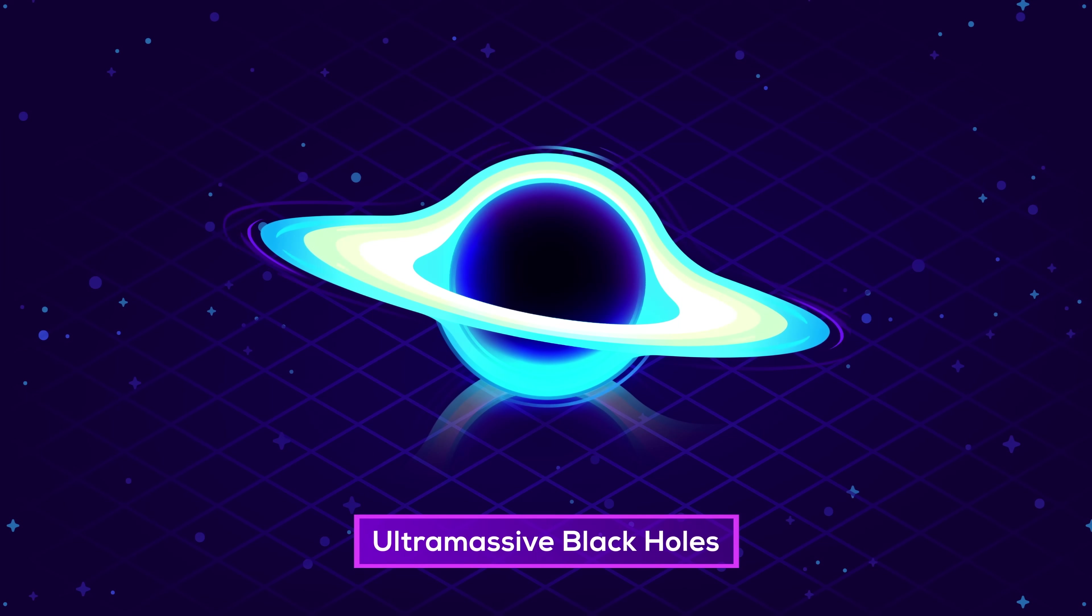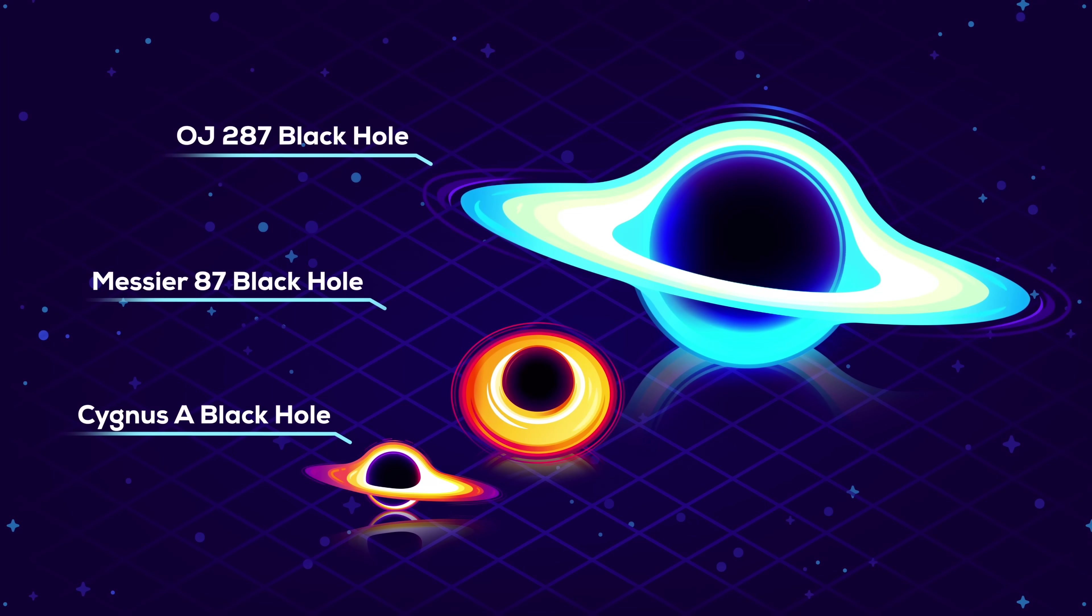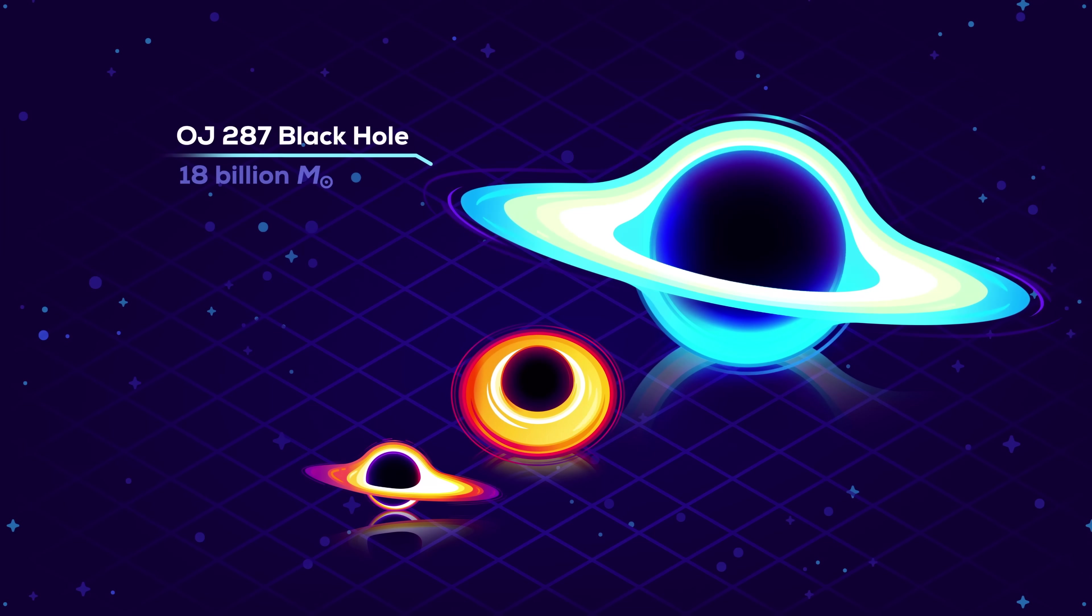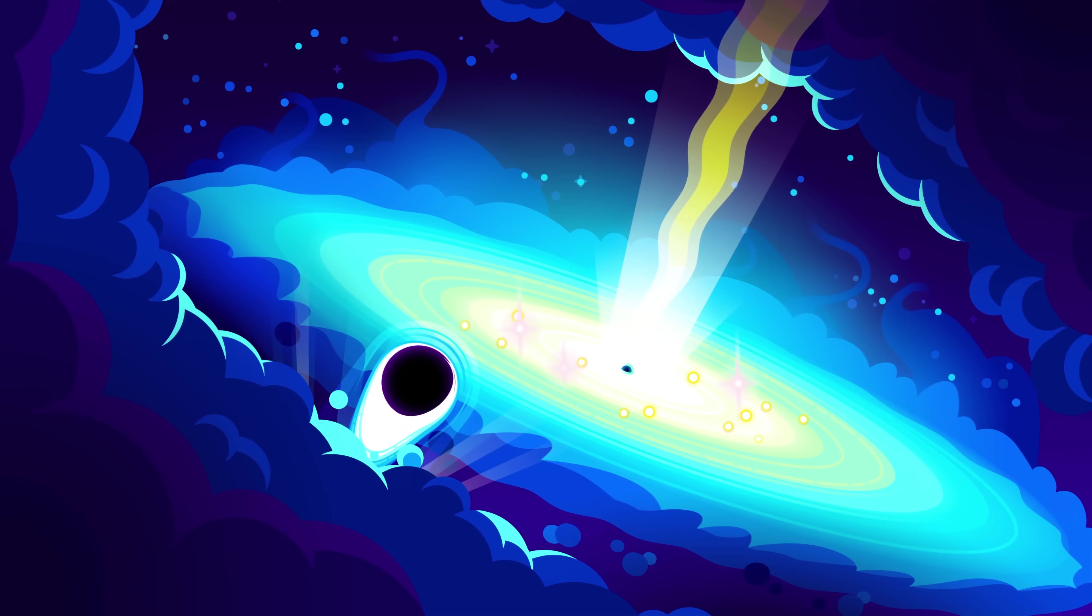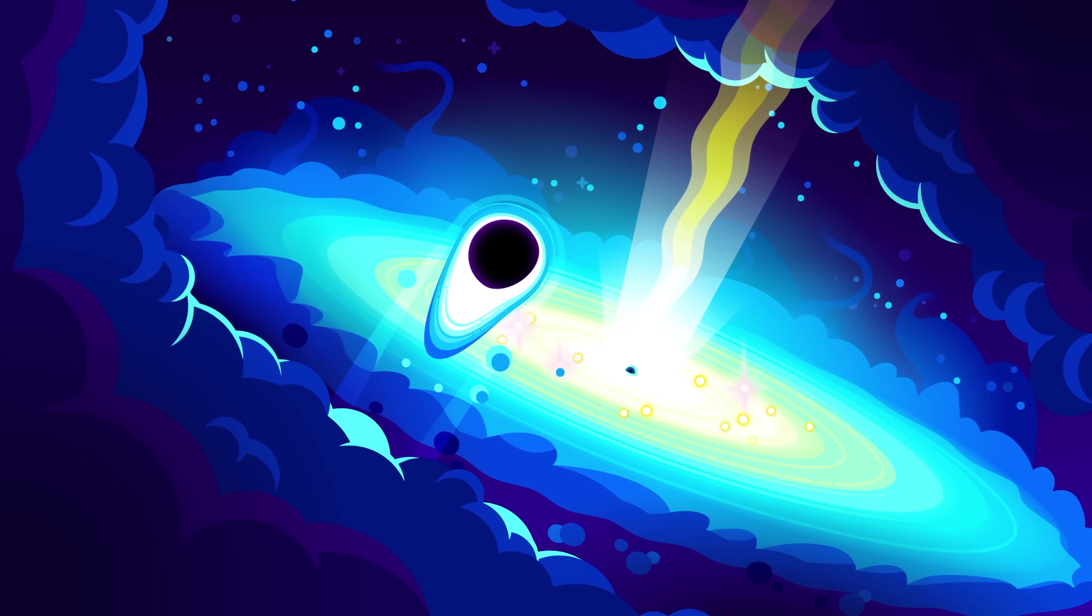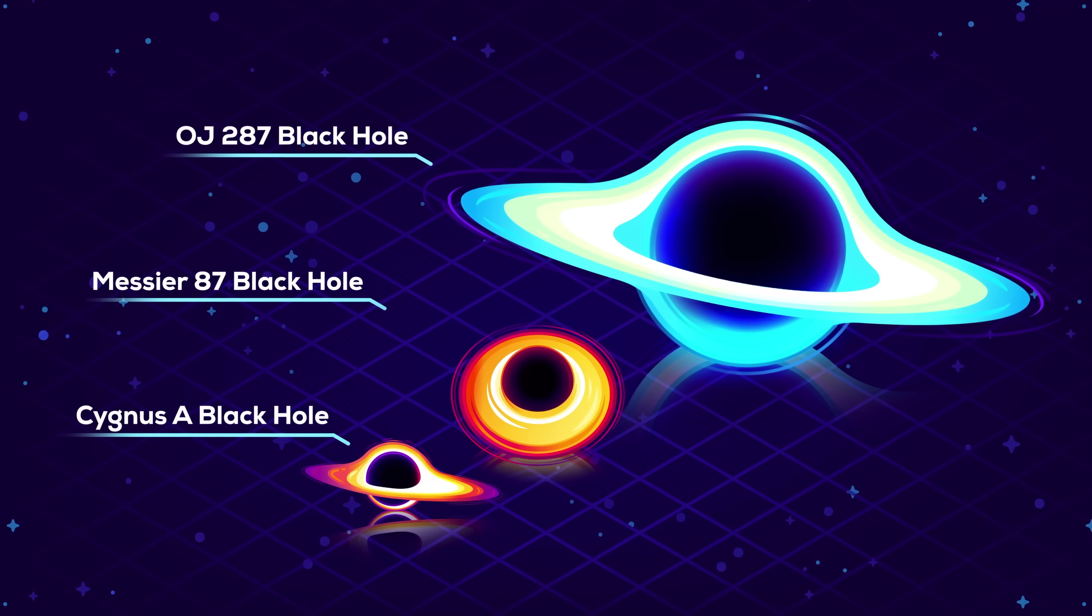So massive that they deserve a title of their own – ultramassive black holes. The ultramassive black hole at the center of galaxy OJ 287 is 18 billion solar masses. It's so big that it has a supermassive black hole nearly 40 times larger than Sagittarius A star orbiting it. This thing defies imagination and is really hard to compare to anything.